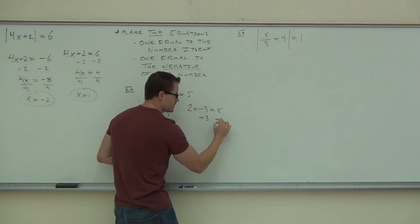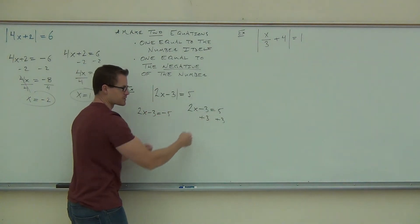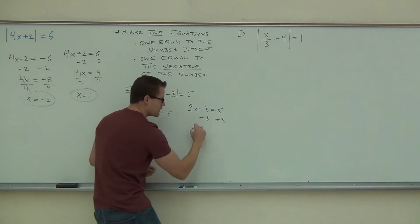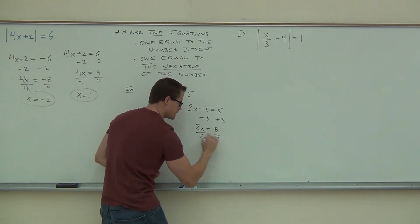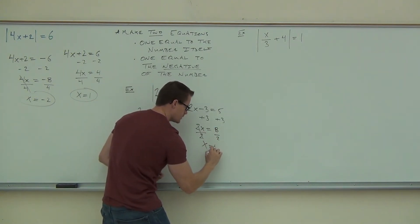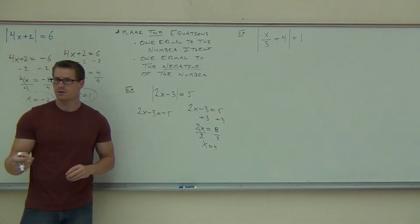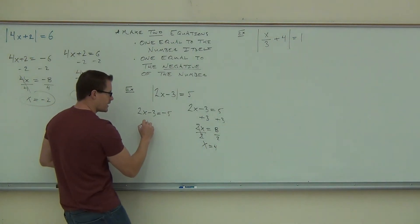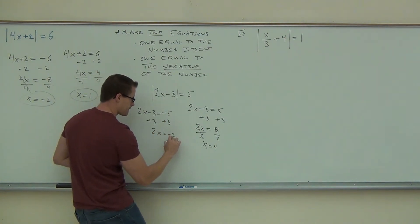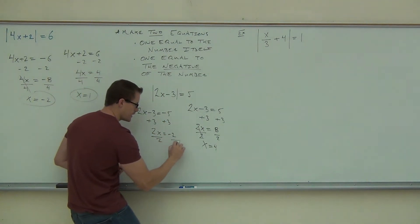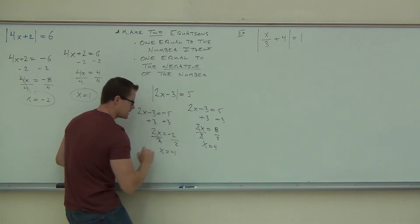Notice how the steps are the same — you're just adding, subtracting, or dividing with a different number on the side. So we'll have 2x equals 8, divide by 2. Hopefully you got 4 as one of your solutions. The other one: we'll add 3 just like we did before, giving us negative 2. Divide by 2 and get negative 1.